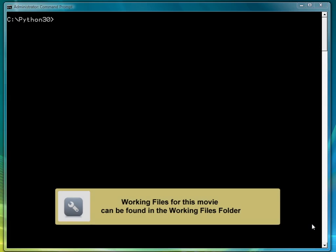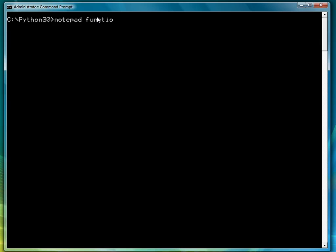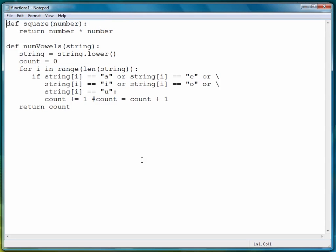In this lesson, we're going to continue our introduction to functions by looking at the next part of working with functions, the function call. Let's go back to our program we created in the last lesson, functions1.py, and you'll remember we have two function definitions, one function to square a number and another function to count the number of vowels in a string. So let's see how to use these functions in a program.